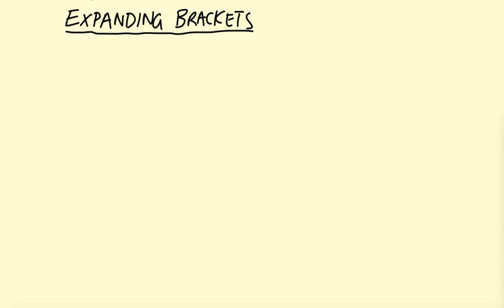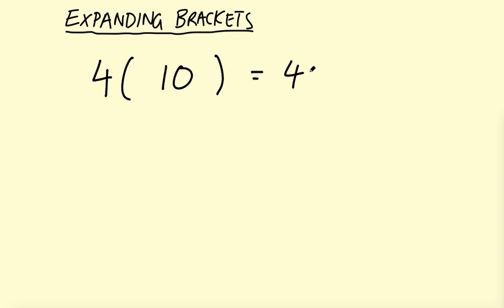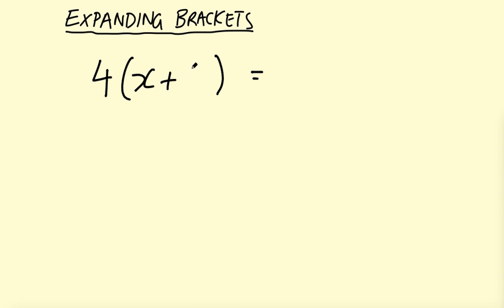In this video I'm going to be showing you how to expand brackets — single brackets and double brackets. The main thing to take away is that when you've got brackets, you multiply. So for example, if you have four lots of something in brackets, you're multiplying that four. If I had 10 in those brackets that's just 4 times 10. You can put different things inside those brackets — an unknown like X, and say plus 5, so you've got four lots of X plus 5. To expand these brackets you need to multiply that 4 by everything inside the brackets.